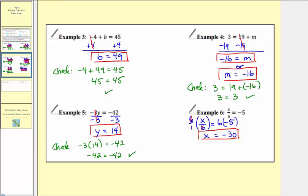For our check, we'll substitute negative 30 for x. So we'd have negative 30 divided by 6 equals negative 5. Well, negative 30 divided by 6 is negative 5. Negative 5 equals negative 5 is true, and therefore our solution checks.